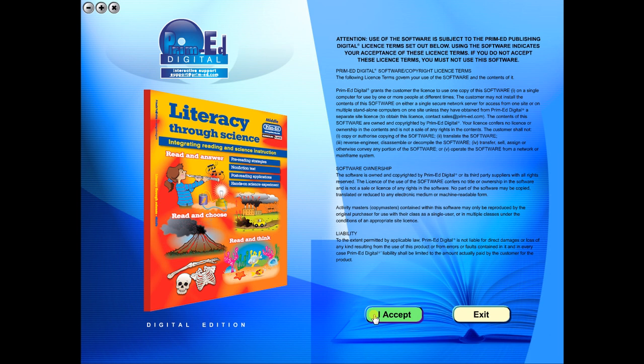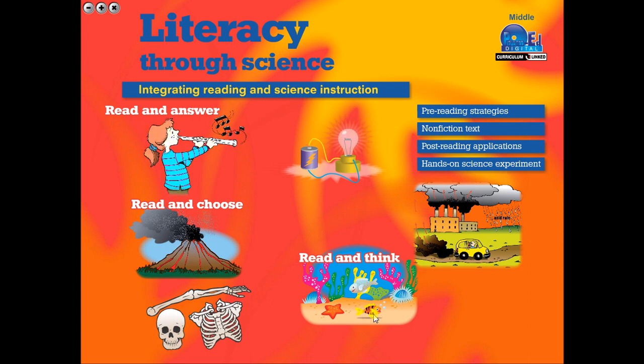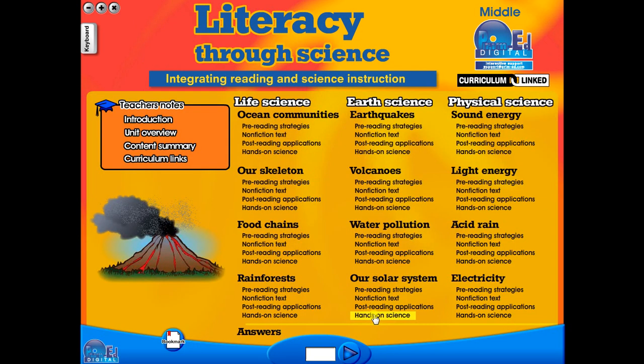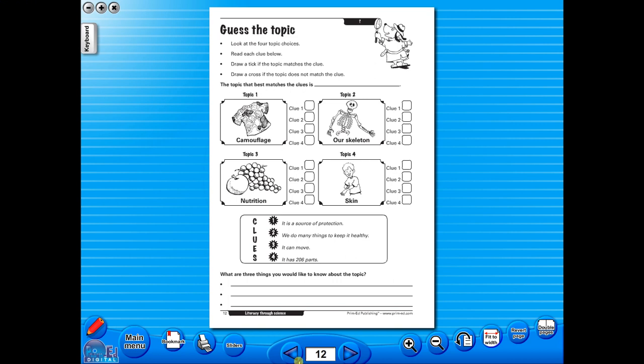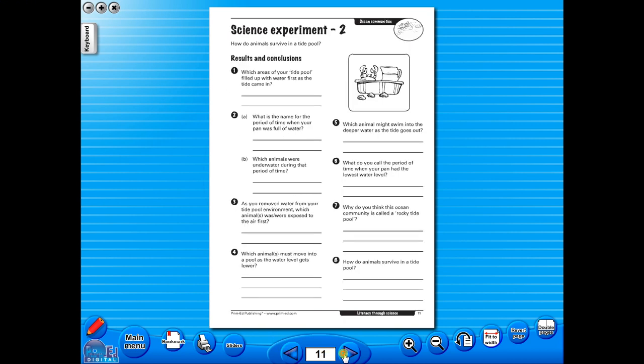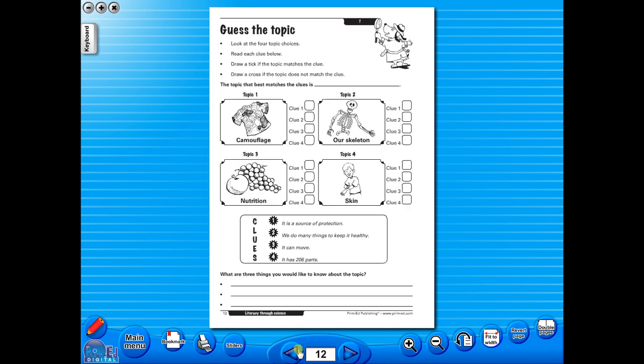To begin, click on the accept icon to enter the eBook main menu. We are now looking at the main menu, which shows every topic in the eBook. When you click on any topic, you can scroll through the pages by clicking on the left and right arrows, making it easy to leaf through the resource. But you can also select a specific page from the main menu.